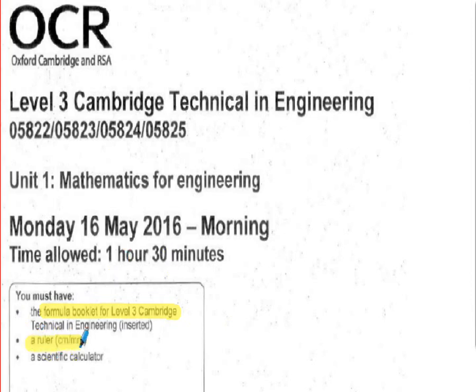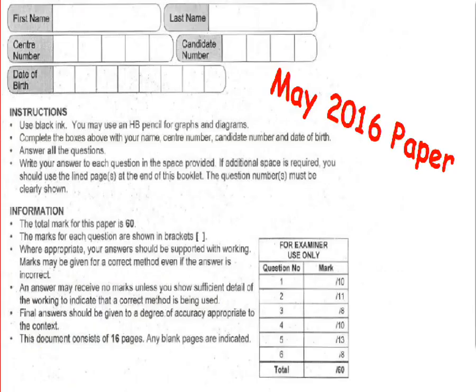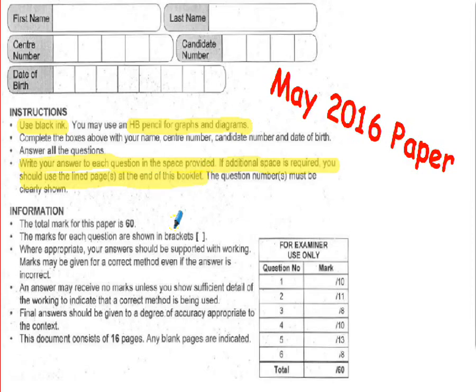You'll obviously need a ruler and a scientific calculator in the assessment — that goes without saying. Let me take you through some generic comments from OCR about the assessment. First, some administration: use black pen and HB pencil for drawing graphs and diagrams. Remember to bring those with you. Candidate number and centre number will be provided at the time of the test.